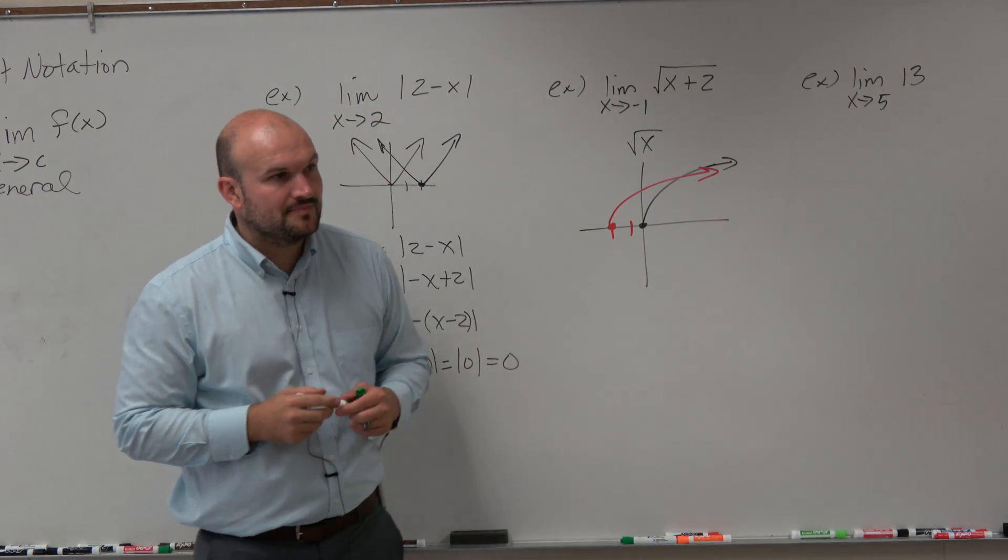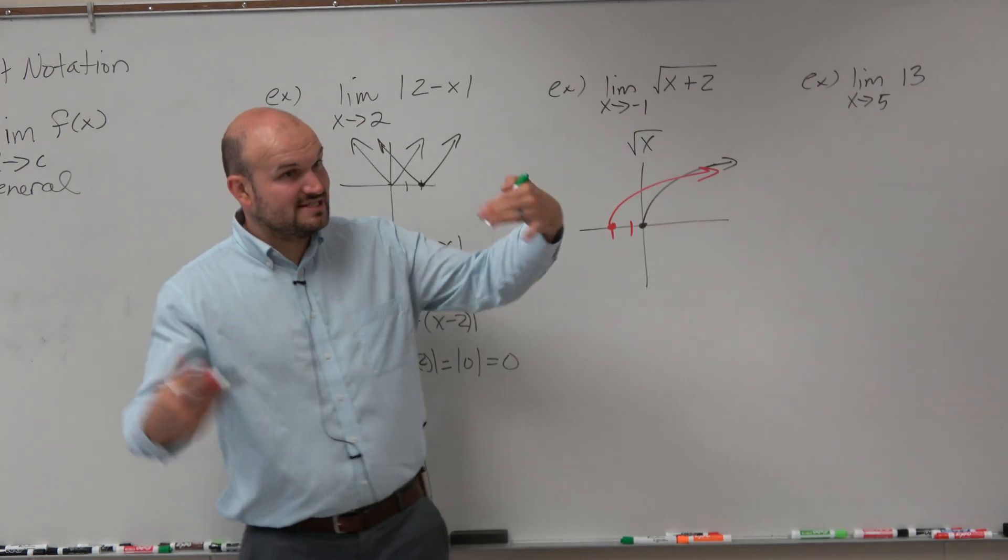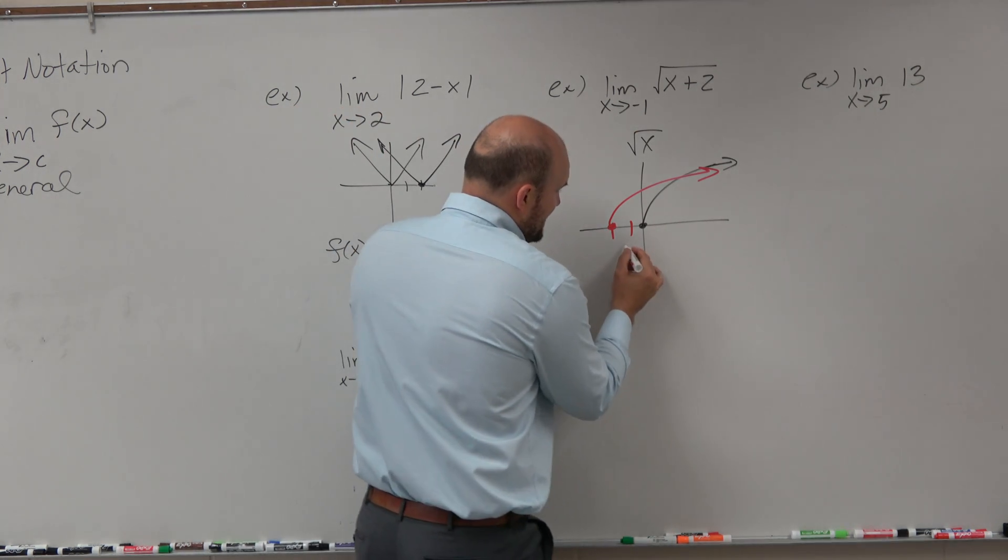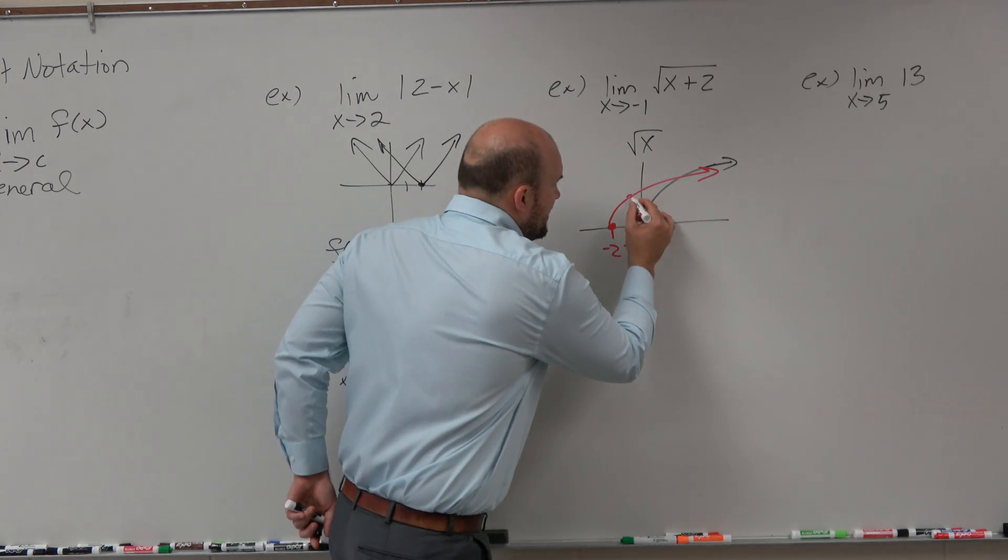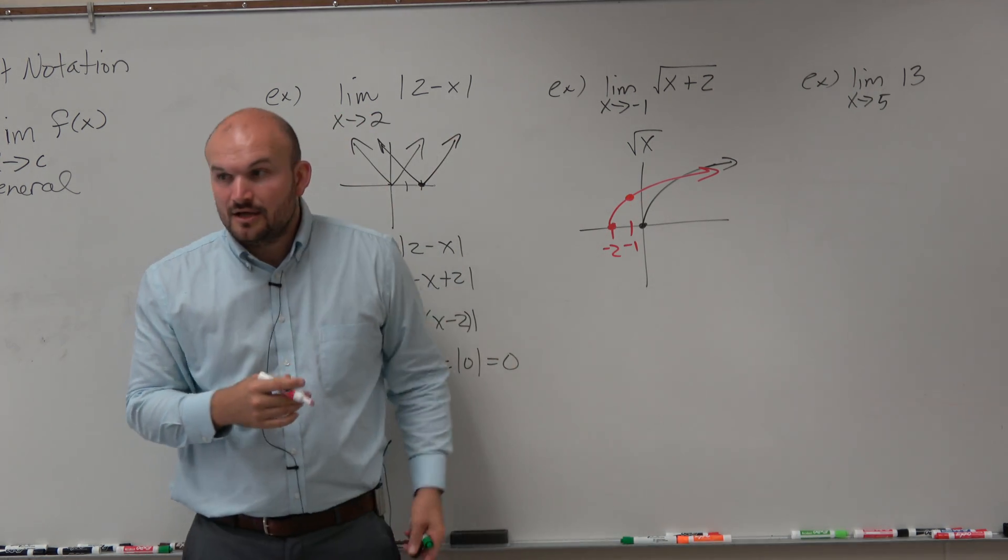So the graph looks something like that. So what we're trying to do is say, what is this graph approaching at x equals negative 1? Well, there's negative 2, there's negative 1. So we're trying to figure out what is that value.